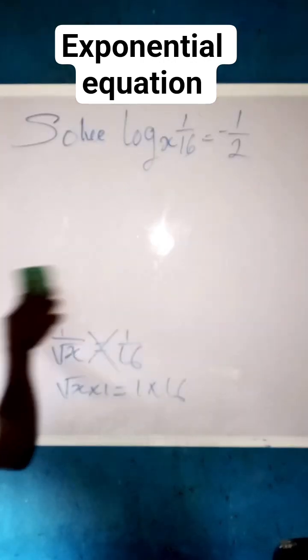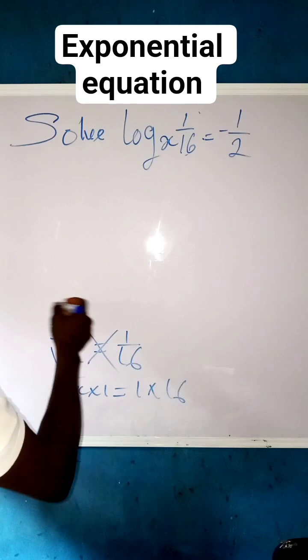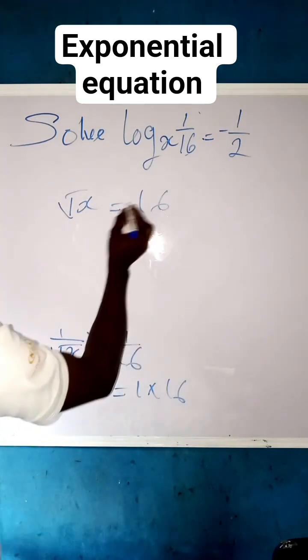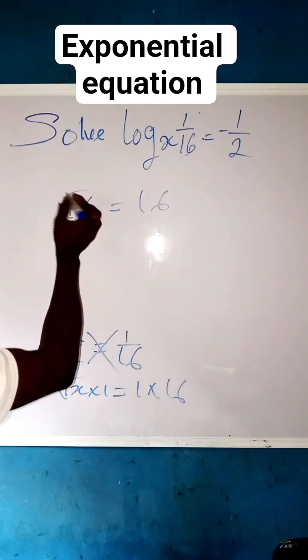So root x times 1 gives us root x equals to 16. And we are looking for x, not root x.